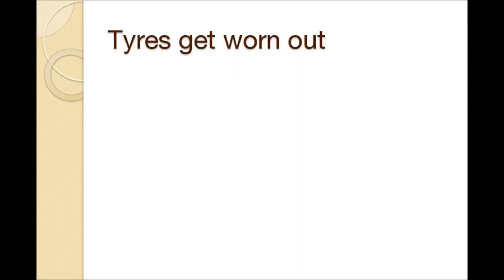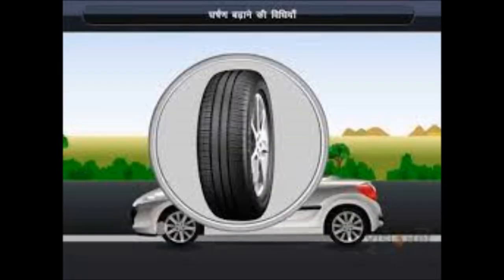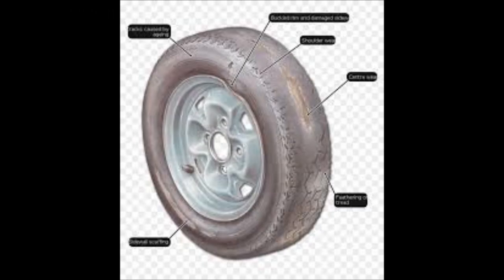When vehicles like cars, buses, trucks, etc. run on the road, there is friction between the surface of the tires and the road. The rubbing keeps breaking off tiny pieces of rubber from the tire's surface gradually. Ultimately, all the threads on the surface of a tire get worn out and the tire becomes bald. Such bald tires have to be replaced by new tires. Thus, the tires of vehicles wear out due to friction with the road.